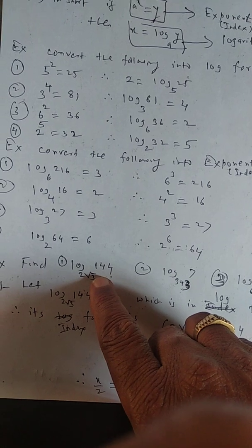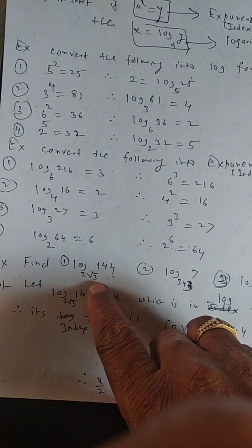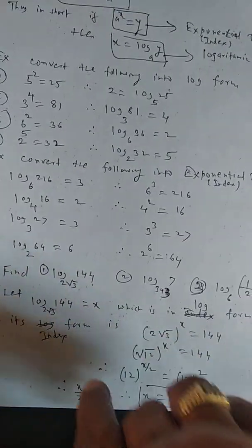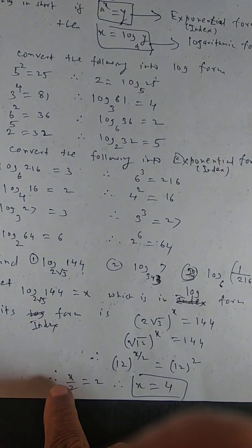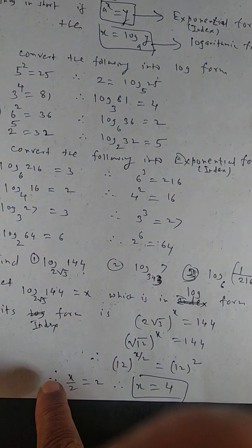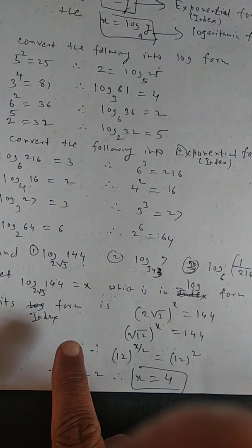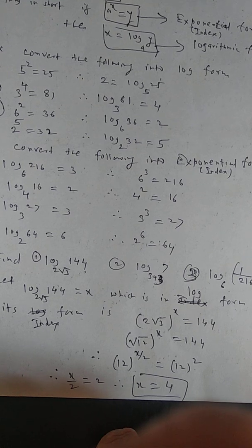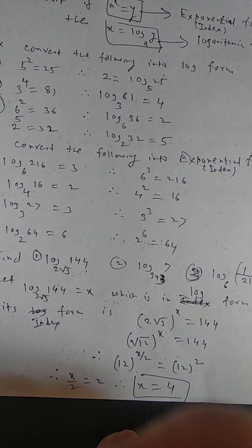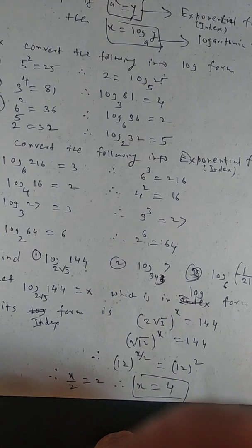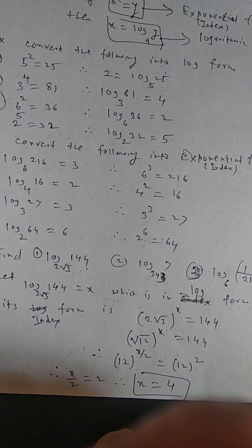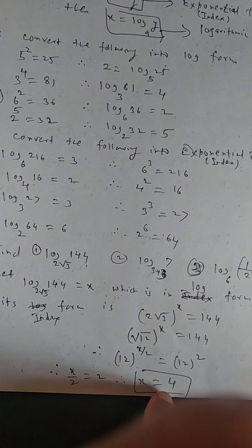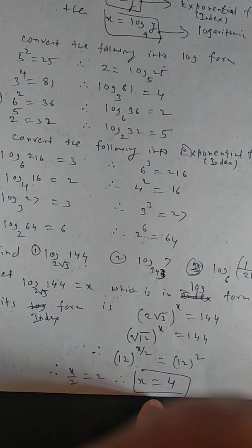Find or simplify log of 144 to the base 2√3. Assume its value as x, so it is in log form. Therefore its index form is (2√3) raised to x = 144. But 144 is 12 squared and 2√3 is 12 raised to half. So 12 raised to half, raised to x, means 12 raised to x/2 = 12 squared. Therefore x = 4 is the answer; that is, log_( 2√3)(144) = 4.